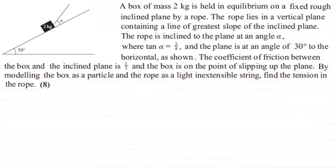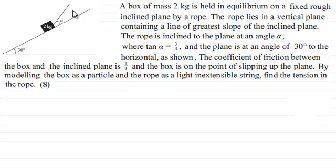Hi there. This makes for a great revision question if you're looking to work on particles in equilibrium on a rough inclined slope. What we've got here is a box of mass 2 kilograms held in equilibrium on a fixed rough inclined plane by a rope. The rope lies in a vertical plane containing a line of greatest slope of the inclined plane, and the rope is inclined to the plane at an angle alpha where tan alpha equals three quarters.